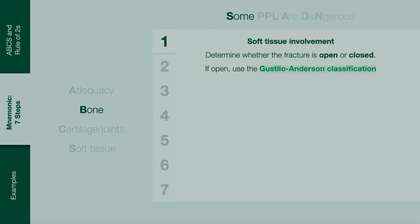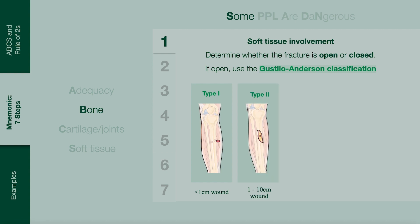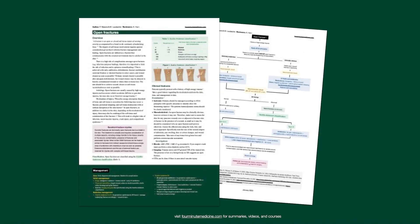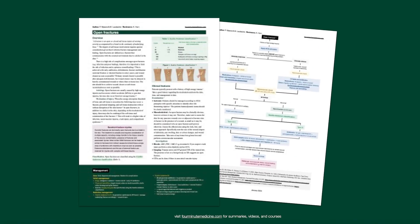There are three main types of open fractures. Type 1 fractures have a wound size less than 1 cm and minimal soft tissue injury. Type 2 wounds are between 1 to 10 cm with moderate soft tissue injury and contamination, whilst type 3 injuries are greater than 10 cm with extensive soft tissue injury and/or contamination. Type 3 injuries can be further classified based on whether there is adequate soft tissue coverage or an associated vascular injury. Farm injuries and high-energy injuries such as gunshot wounds, despite their size, are classified as type 3 open fractures.